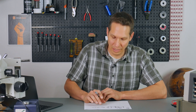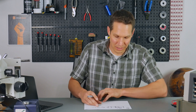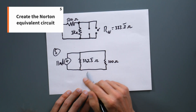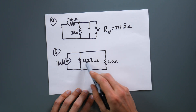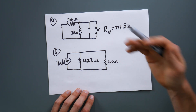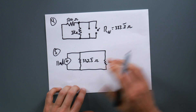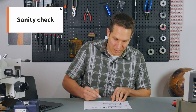We now have the Norton equivalent resistance and the Norton equivalent current, so let's put that together in step five. I've recreated the circuit: we have a current source of 11 milliamps, a parallel resistance of 333.333 ohms, and our load right here. We have finished completing our circuit, and at this point, most of the time when you're doing homework or whatever, this is all you need to turn in. But let's do our sanity check.